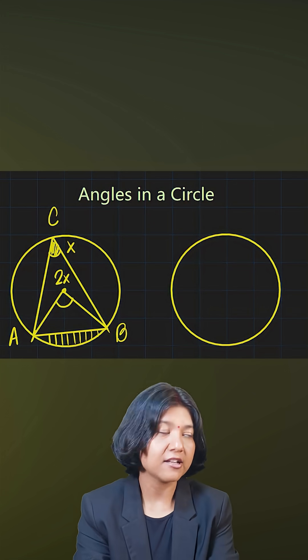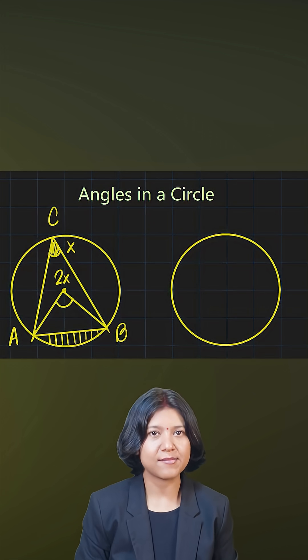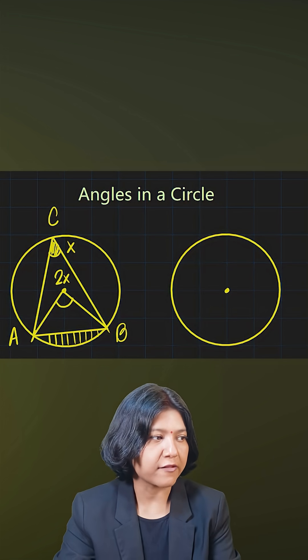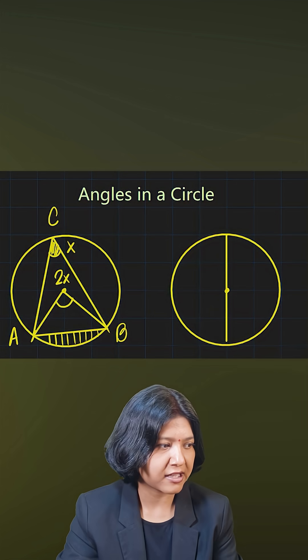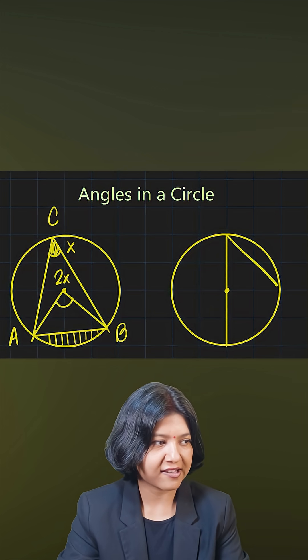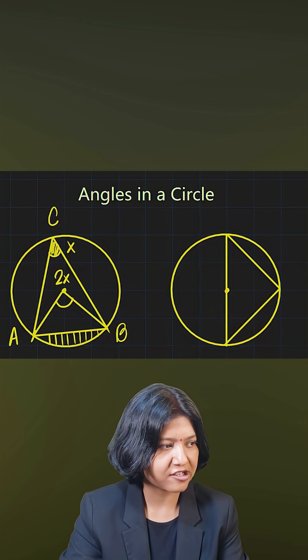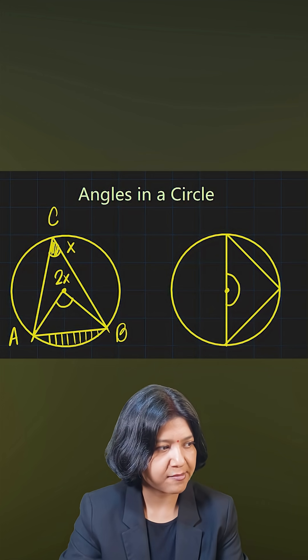Make sure that both the angles are in the same segment. Now because of this theorem, if you have to talk about an angle made by the diameter, the diameter makes an angle of 90 degrees. Why? Because at the center you know it's a straight line. The diameter is a straight line so the angle is 180 degrees here.